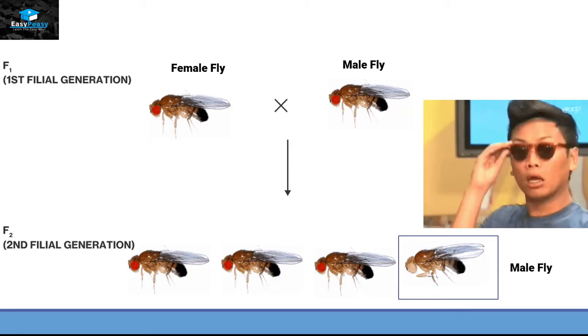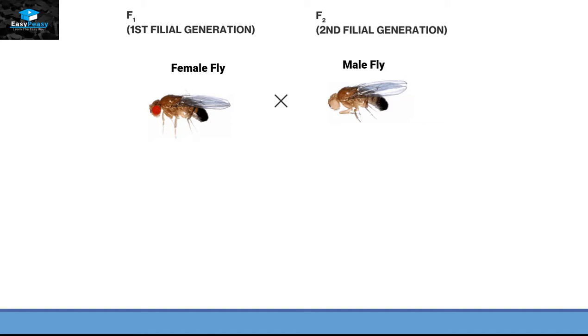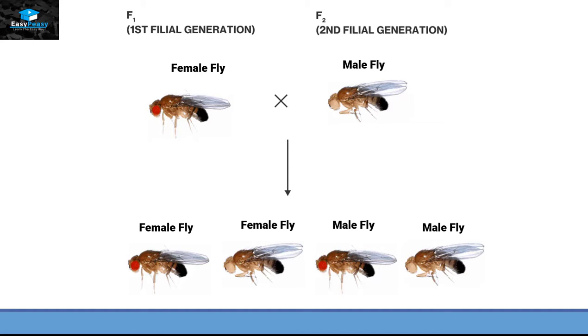He tried to do one more experiment by mating the first filial generation female fly with red eye color with the male fly of F2 generation. The results were that they had equal amounts of female flies and male flies having white eye color.